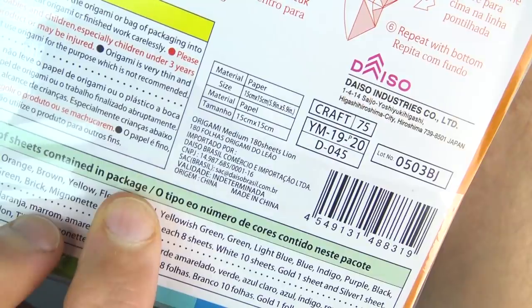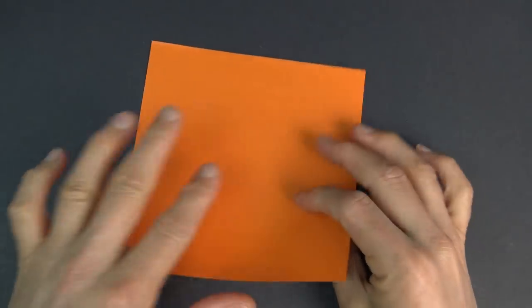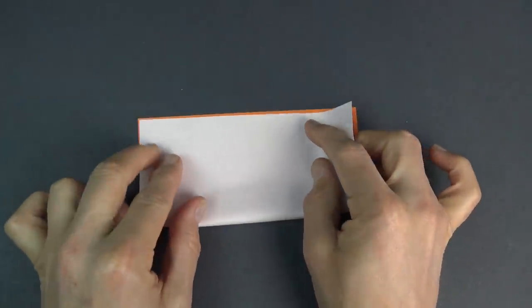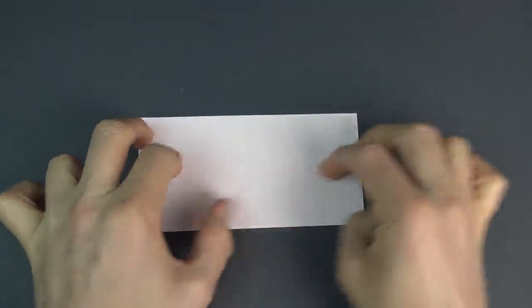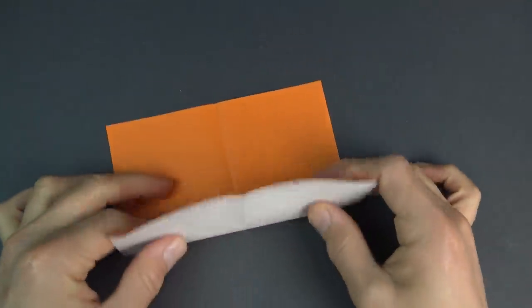Here goes. All right, so for this model I'm going to use a six inch square of kami, but you could use a sheet of printer paper cut square. Begin with the star side up, in this case it's going to be an orange star, and fold in half. This is just like the traditional star box in the start anyway. Unfold, rotate, and fold in half in this direction.